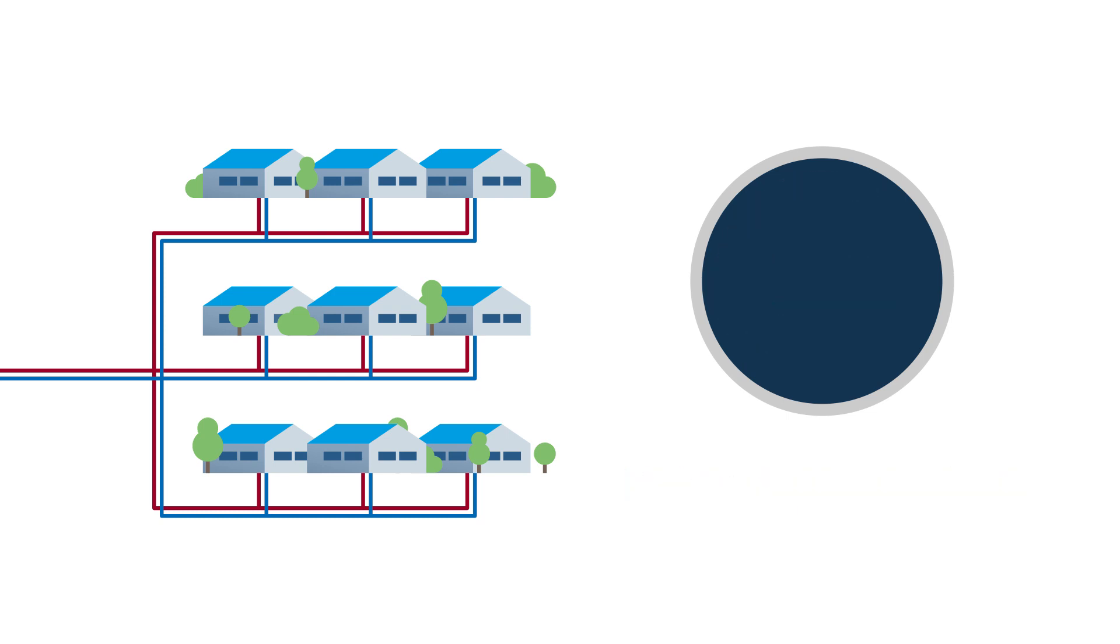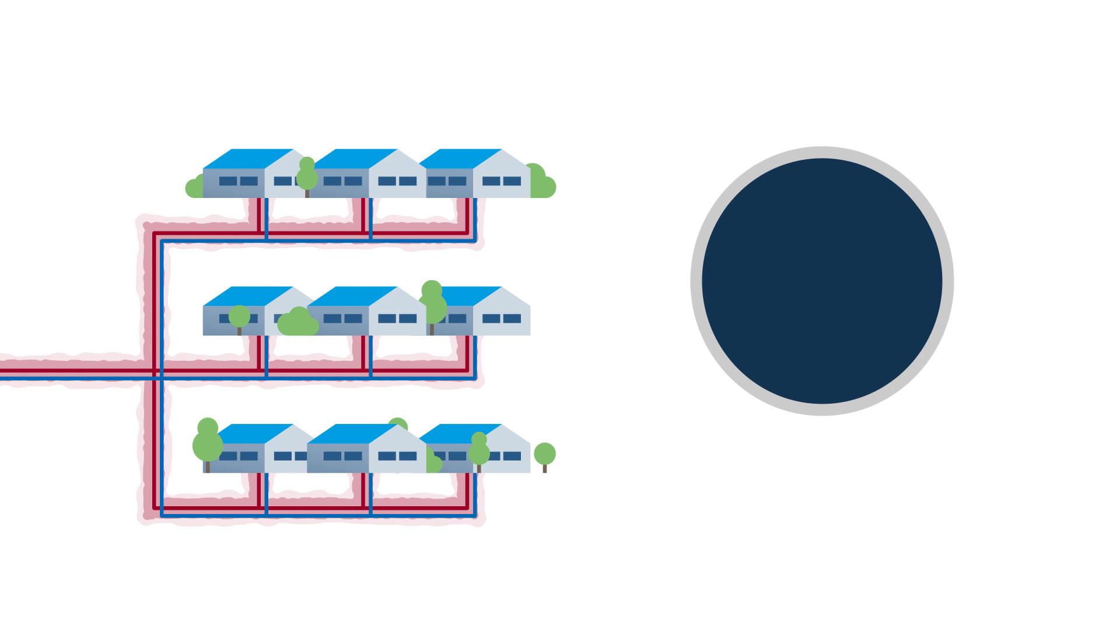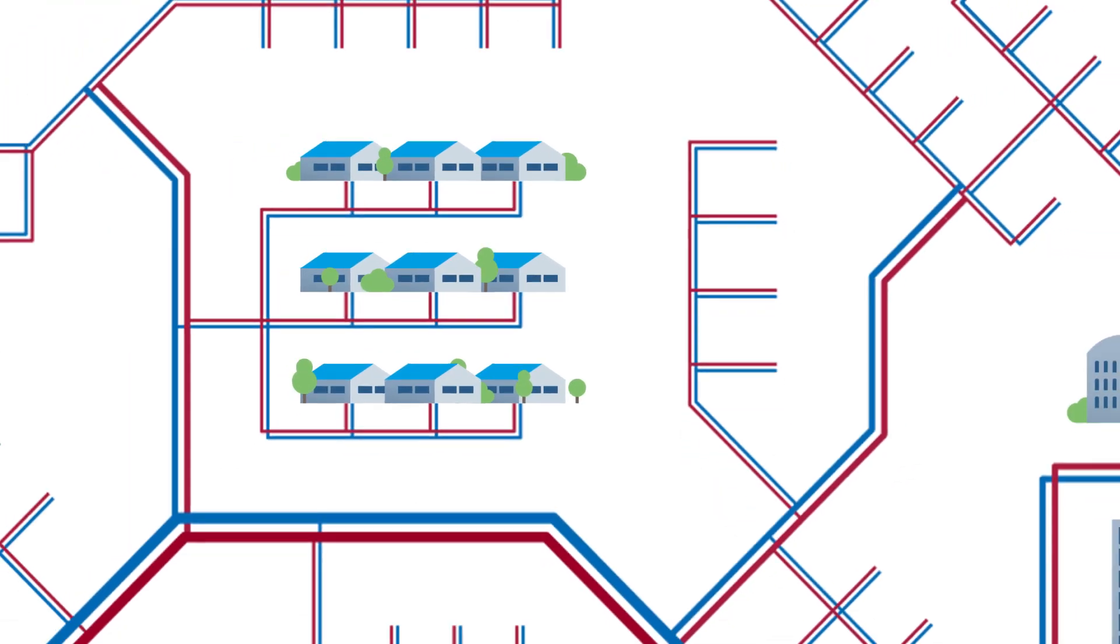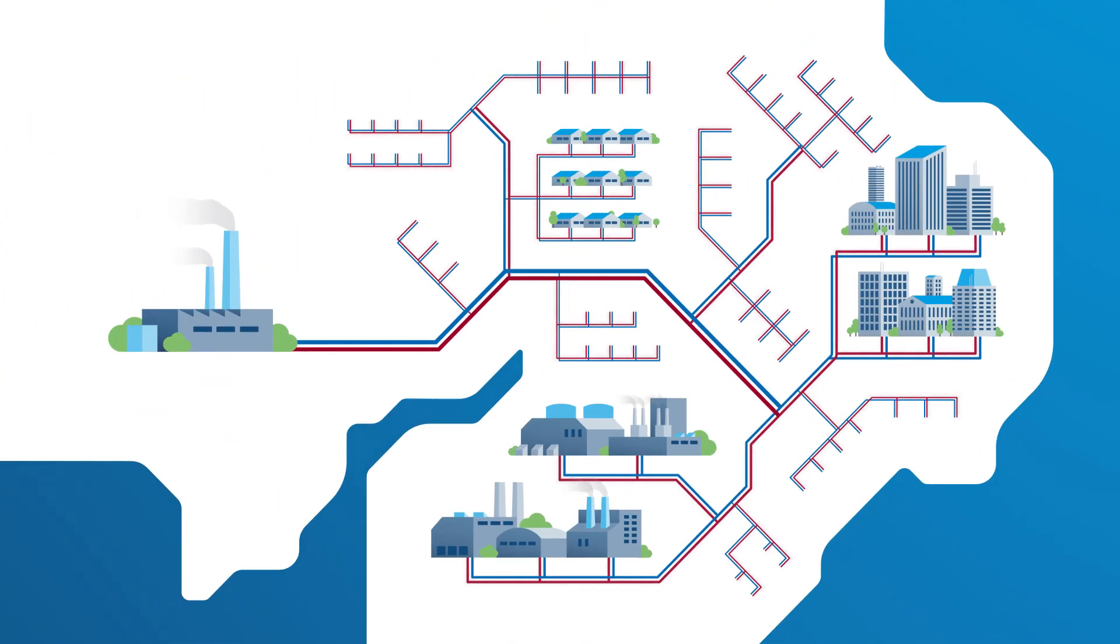The low heat demand combined with small pipes in these areas results in high heat losses in the system. Now if you look at the whole system, the total heat loss is significant and so is the potential for savings.